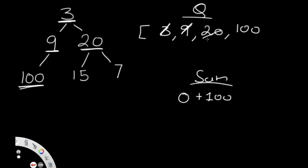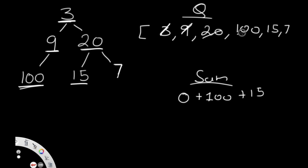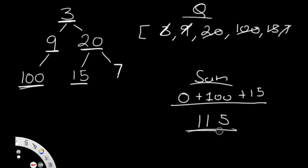Now we pop out 20. We check if 20 has a left child — it does, which is 15. We add 15 to our queue and check if 15 is a leaf. Since 15 has no left or right child, it is a leaf, so we add it to our sum. Then we check if 20 has any right children — it does, which is 7, and since it's a right child we just add it to the queue. Going through the remaining queue: 100 has no children, 15 has no children, and 7 has no children. Our sum is 0 plus 100 plus 15 which is 115 — the answer we were looking for.